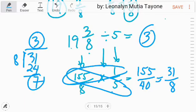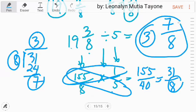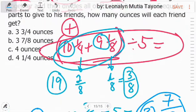And this 7 is the numerator. Copy 8 as the denominator. So the answer is 3 and 7/8. Letter B.